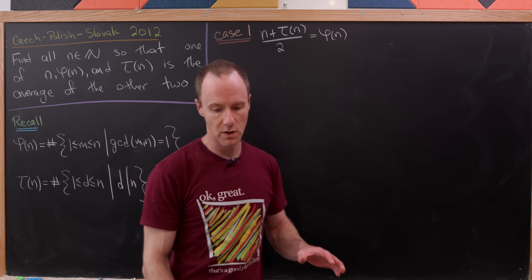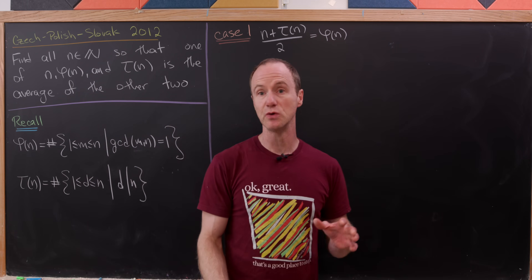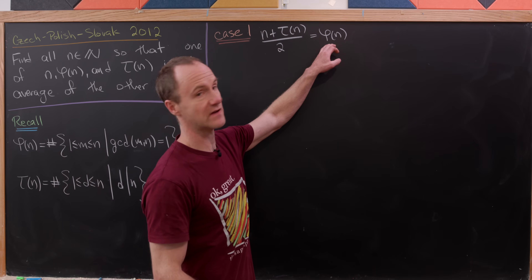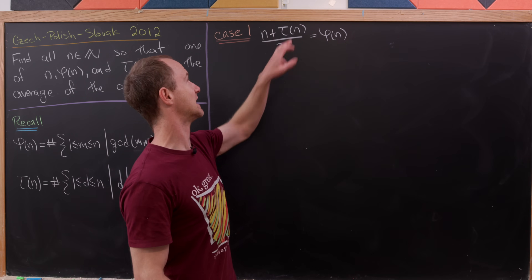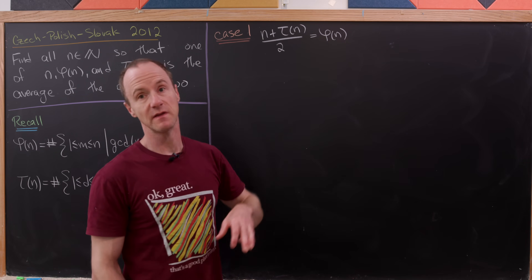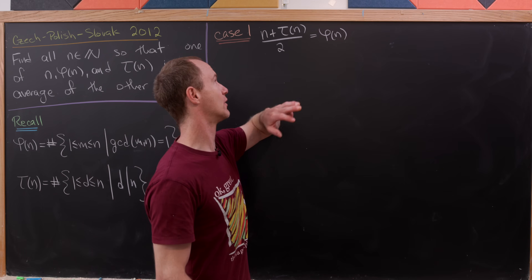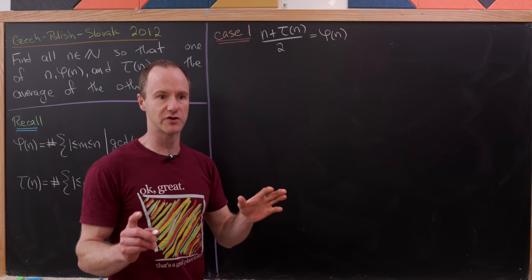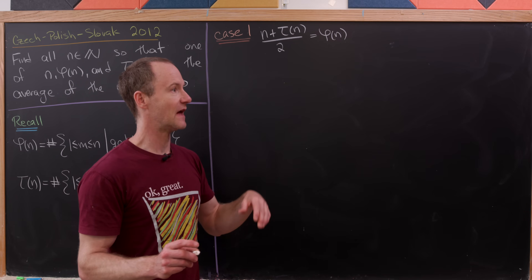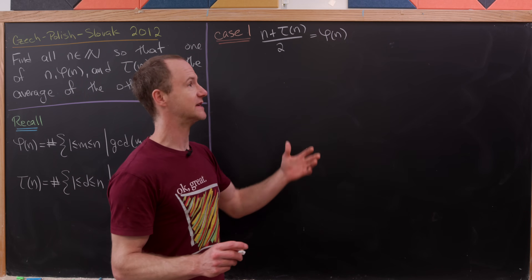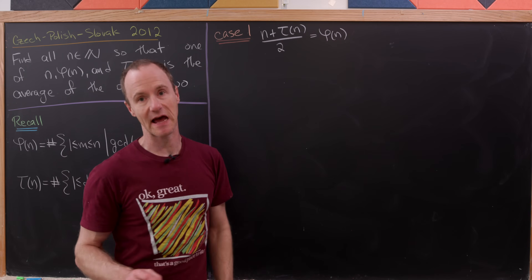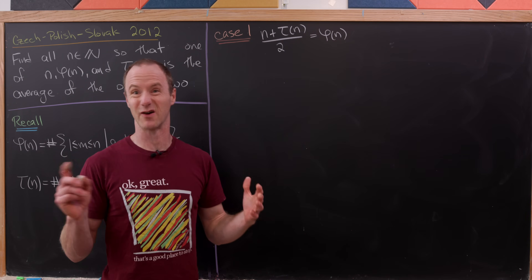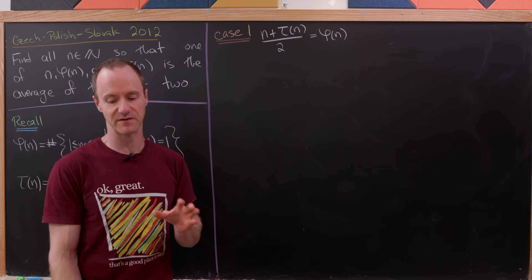This is going to break down into two cases. The first case is when φ(n) is the average of n and τ(n). The other case will be when τ(n) is the average of n and φ(n). You might say there should be a third case — when n is the average of φ(n) and τ(n) — but I'll leave it to you to figure out why that case simplifies very easily.